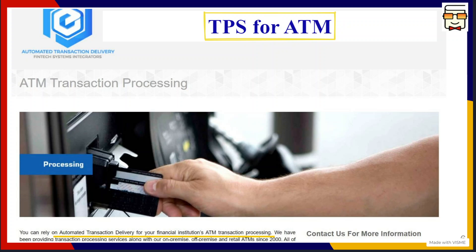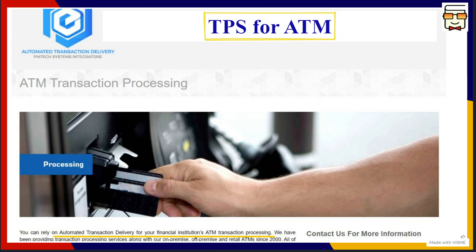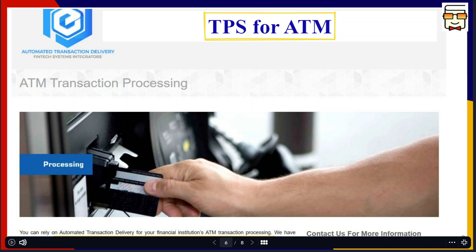The next example comes from the finance industry — specifically for ATM machines. The Automated Transaction Delivery System has been implemented to allow transactions for people who want to utilize ATM machines. You present your card, the cash is withdrawn, and at the same time the amount is updated in the customer's account and in the bank transactions database. All this takes place in a timely, correct, and real-time manner enabled by this TPS.